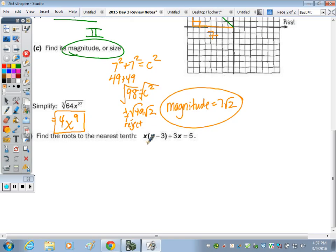And last, find the roots to the nearest tenth. Let's distribute, remove parentheses. x squared minus 3x plus 3x. I'm bringing the 5 over at the same time by subtracting it to get it equal to 0. These cancel.